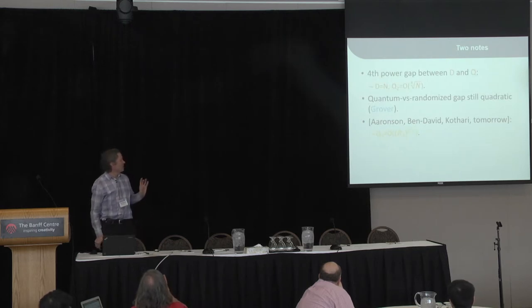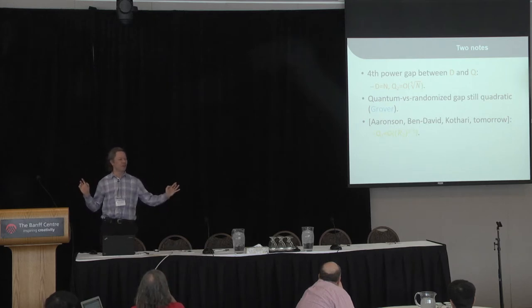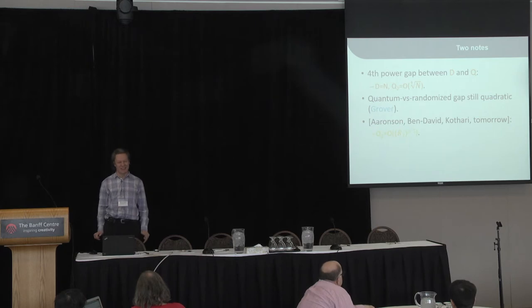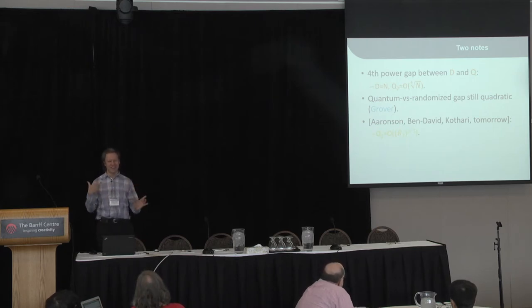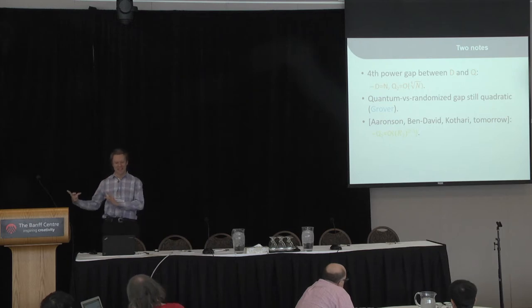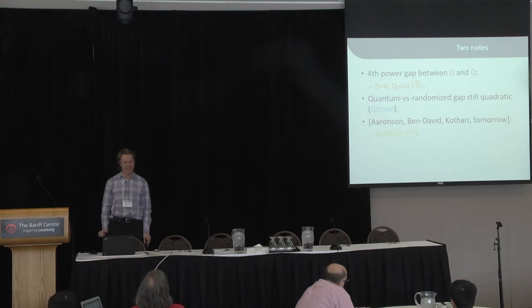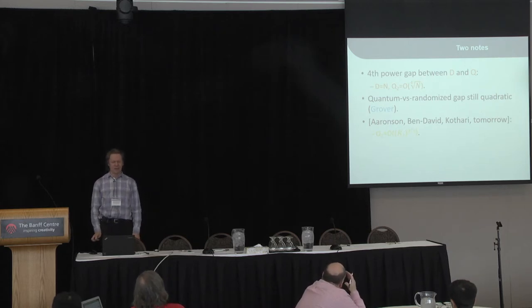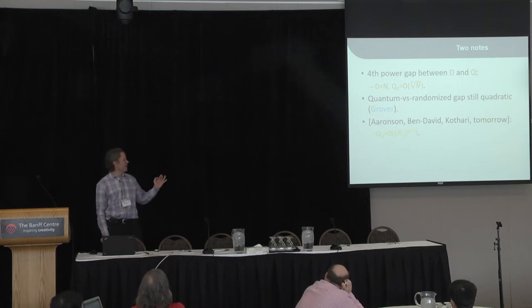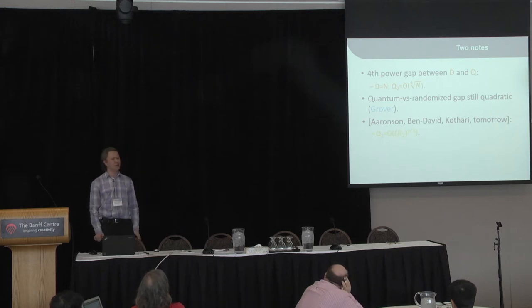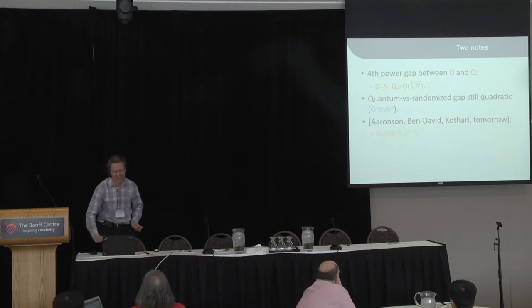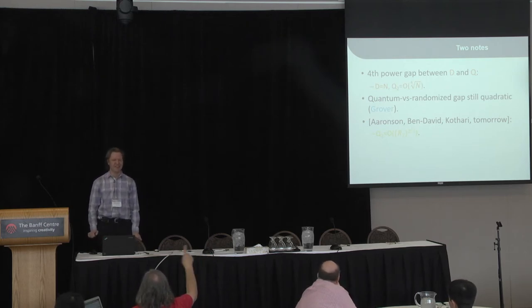Two things to note: I'm presenting a fourth-power gap between quantum and deterministic computation, but the gap between quantum and probabilistic is still quadratic. All the quantum computation here is just Grover's search — we are combining Grover's search with a quadratic gap between randomized and deterministic to get a fourth-power gap between quantum and deterministic. Also, a few months after this work appeared, Scott Aaronson, Shalev Ben-David, and Robin Kothari gave a better gap between quantum and randomized, with quantum complexity equal to randomized complexity to the power two-fifths, presented in a plenary talk.